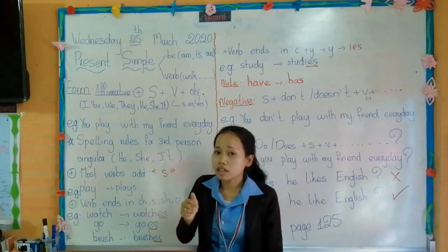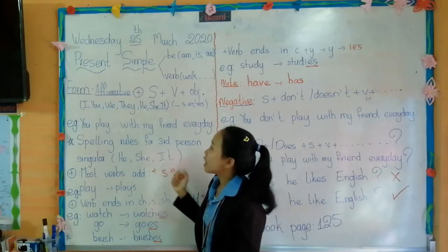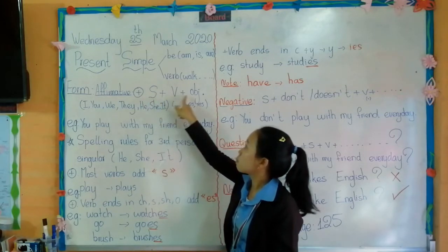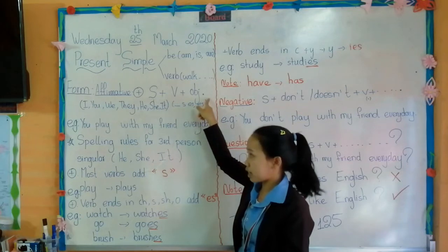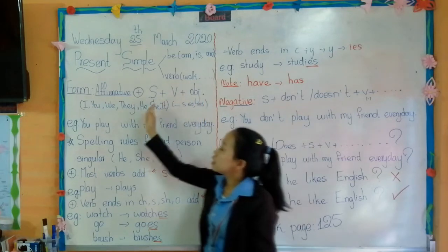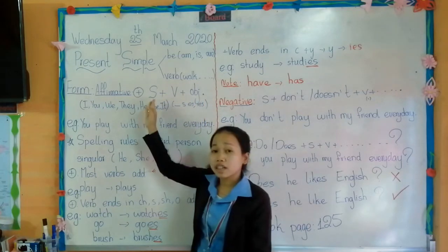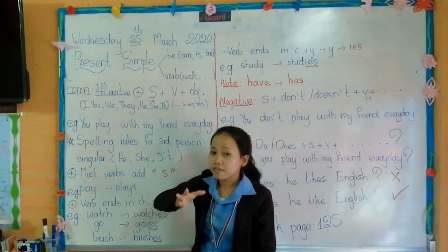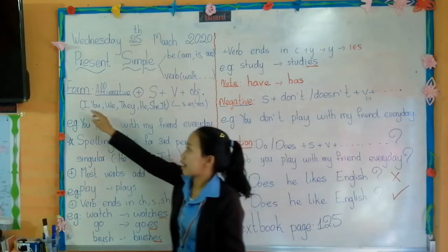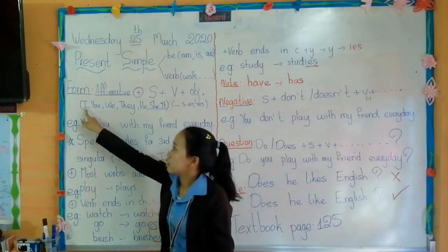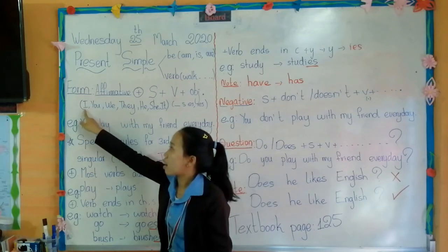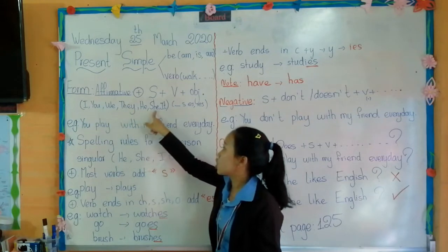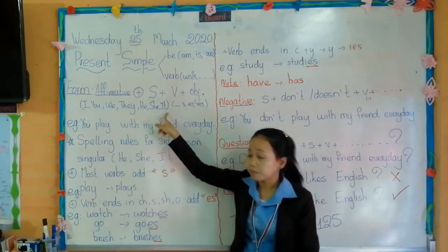Or we can say positive form. That we have subject, verb plus object. And subject pronoun — now we have seven subject pronouns. We have I, you, we, they, he, she, and it.